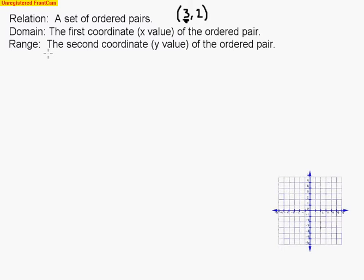The range represents the second coordinate, or the y value of the ordered pair. So in this case, the range would be 2. So here we had a domain of 3, here we had a range of 2.